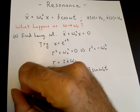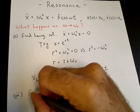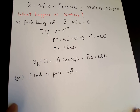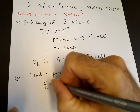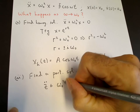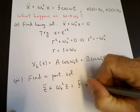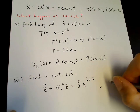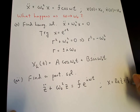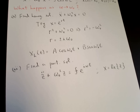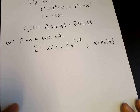The next step is to find a particular solution. We can do that by converting to a complex equation. If z equals x plus iy, we write the equation for z as z double dot plus omega-naught squared z equals f times e to the i omega t, since cosine omega t is the real part of e to the i omega t. Here x equals the real part of z. So this represents two equations — one for the real part of z and one for the imaginary part — and the real part matches the equation we're trying to solve. Now we have an exponential inhomogeneous term.